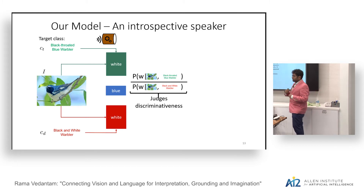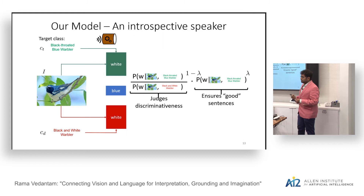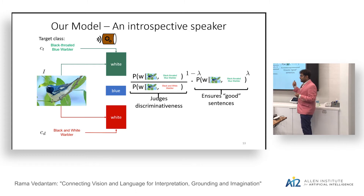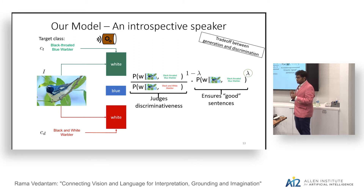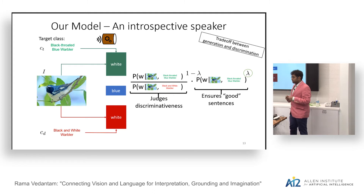You have a term which judges how discriminative an utterance you're picking will be. But on its own, this term does not enforce any grammatical structure — there's nothing saying 'find me a highly likely sentence.' So we add another term which ensures good sentences: a term saying 'find me a word highly likely under the target class.' We weigh these with factors of lambda and one minus lambda, where lambda realizes the trade-off between how generative and how discriminative you want to be. You can continue this with beam search across multiple time steps, generating something like 'blue throat and wings.'